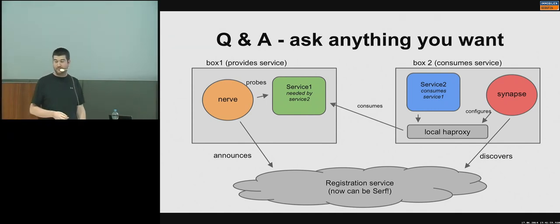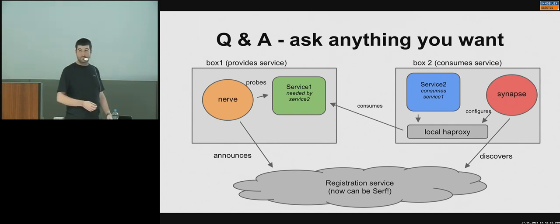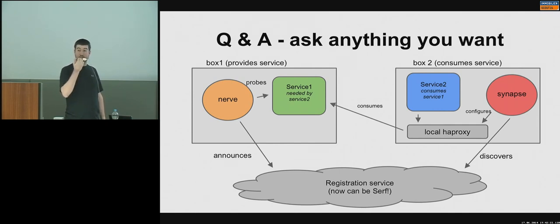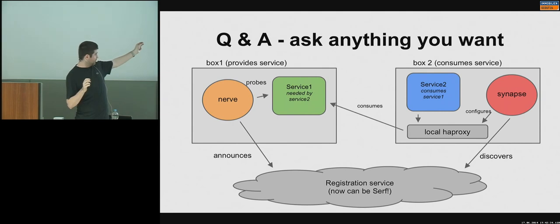Question: how does it scale in a many-to-many relationship — like 20 instances of Service One and 50 of Service Two? Do you then have 50 local HA Proxy instances each load balancing over all 20 of Service One? The answer is yes. Are there any interference issues having 50 HA Proxy instances deciding how to load balance over those 20 services?